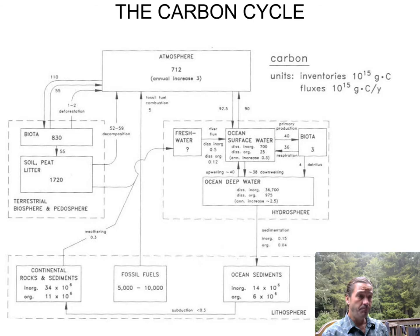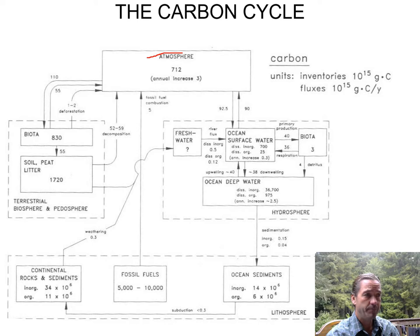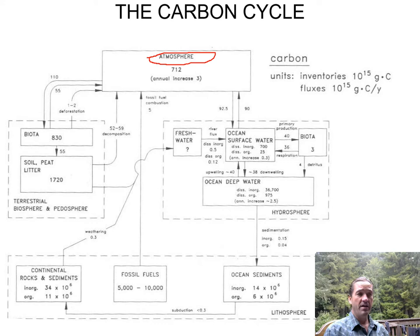Here's our box model — hopefully you can get a printout of this carbon cycle box model to refer to. This box model is actually fairly old, but I continue to use it because of all the information on it. Some numbers have definitely changed, especially for the atmosphere. The information here is close to 40 years old.